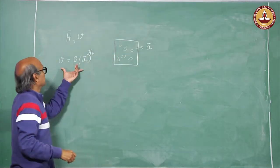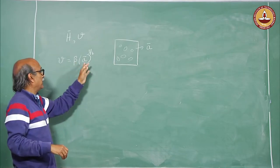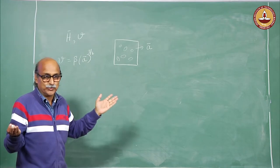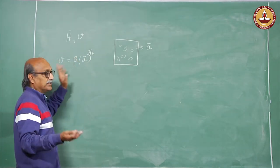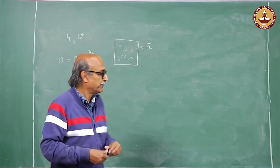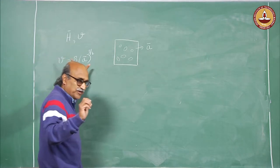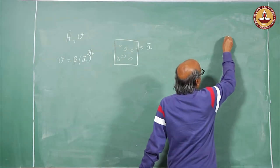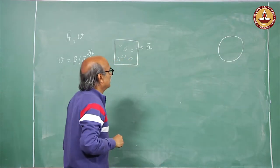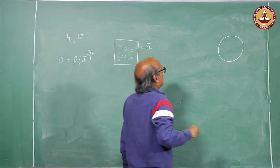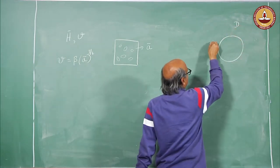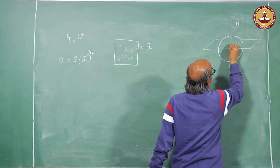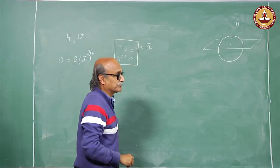This expression balances units because A-bar has units of length squared, so to the power 3/2 makes it length cubed, which is a volume. Beta is therefore a dimensionless shape measure. I will show this for a simple case of a sphere, and then it is applicable for any shape. Taking a sphere of diameter D, a sectioning plane cuts the sphere at some location at some distance from the center.